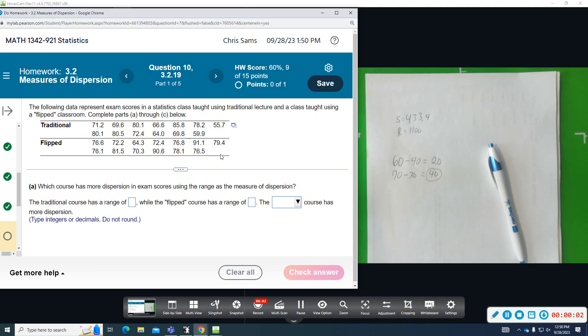Question number 10. We've got five parts here. It says the following data represent exam scores in a statistics class taught by traditional lecture using a flipped classroom. We're going to complete parts A through C.